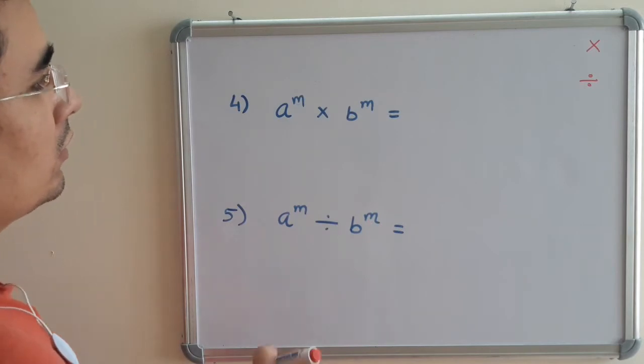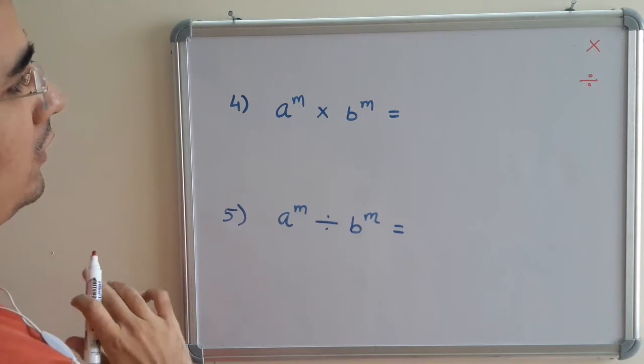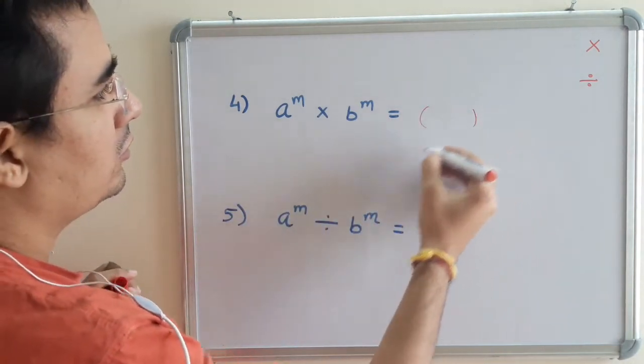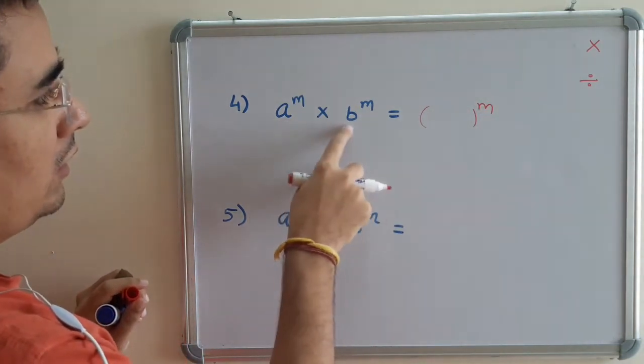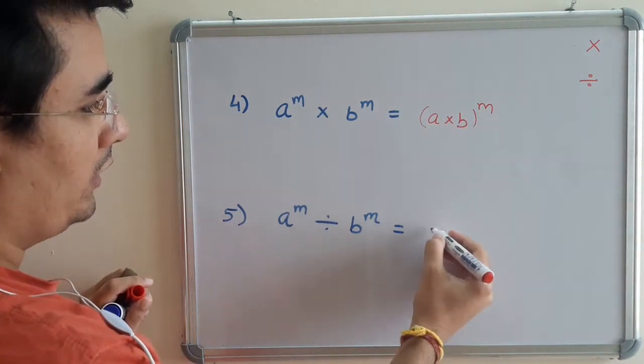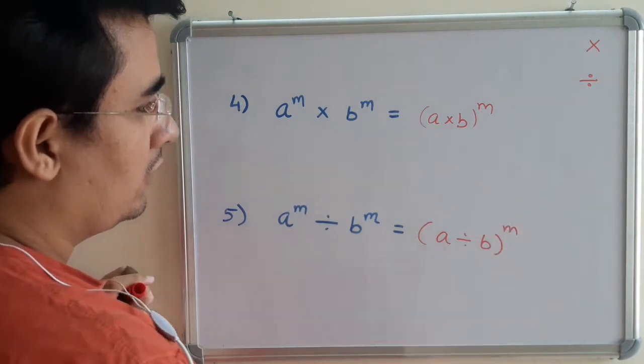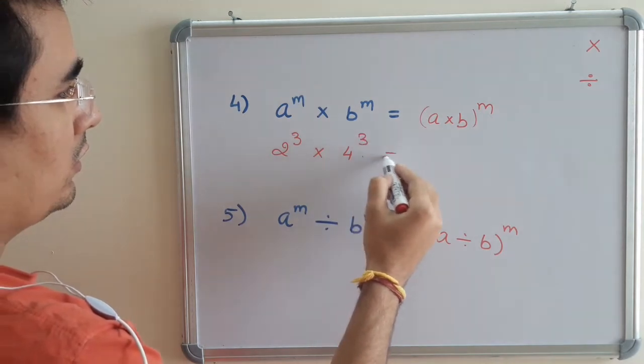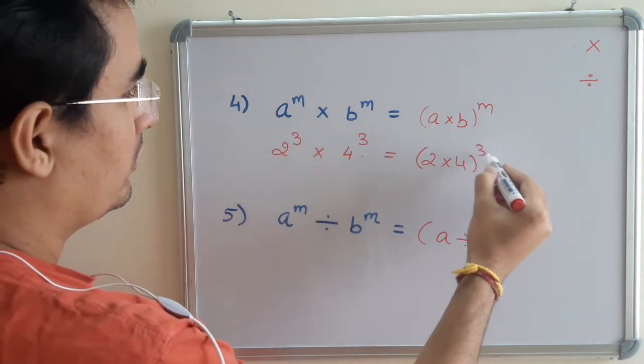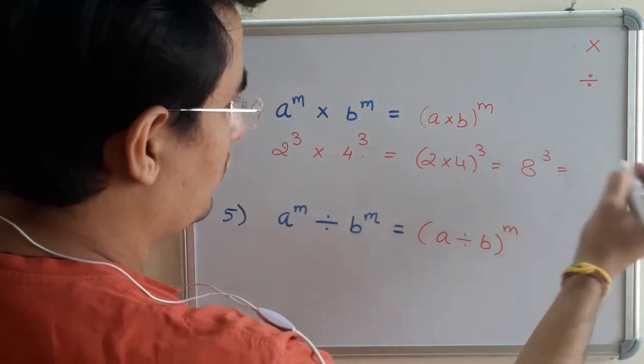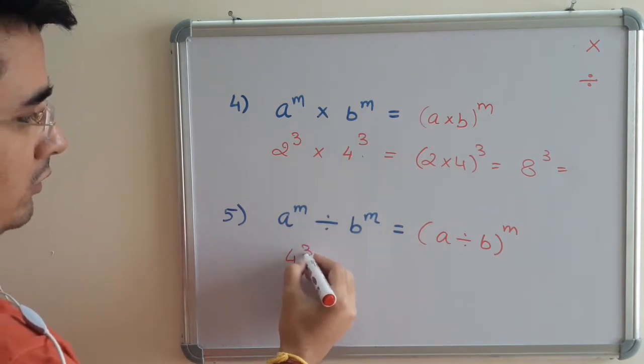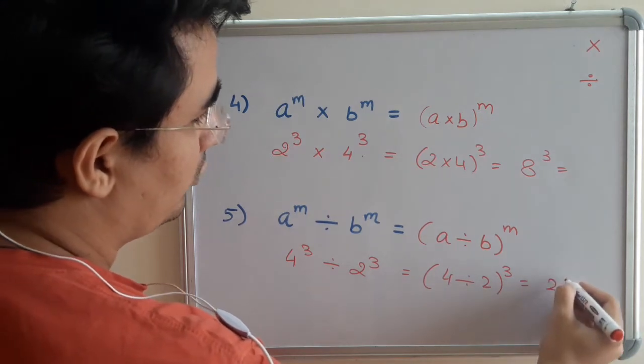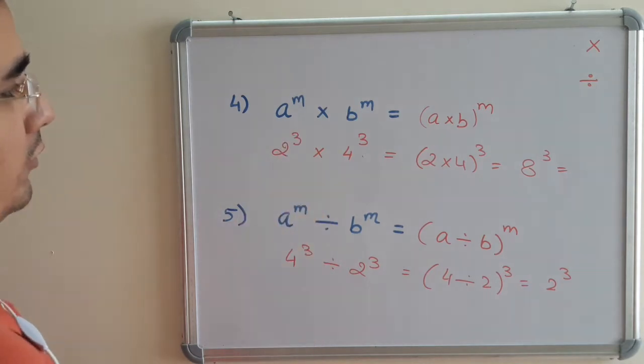Next comes when powers are same and bases are different. In case of powers are same, just like when the bases were same we were taking base one time, in this case also we will be taking power one time. Here we will be simply multiplying, and here we will be dividing. Let's see an example. Suppose 2^3 multiplied by 4^3, we will be writing it as (2 × 4)^3, so that is 8^3. Similarly here, suppose this is 4^3 divided by 2^3, we will be writing it as (4 ÷ 2)^3, and this gets divided to 2^3. This is when the power is same.